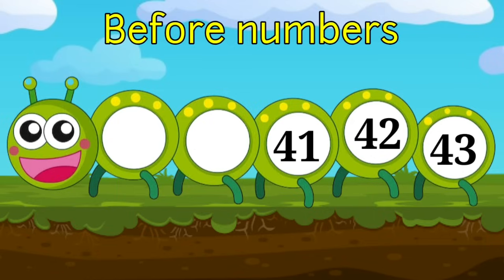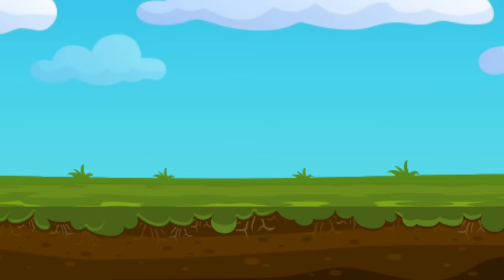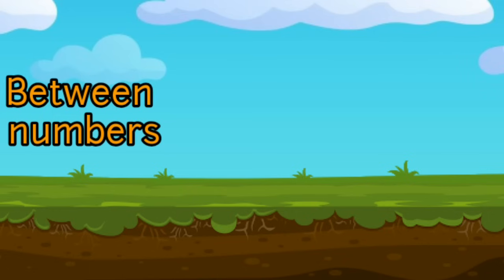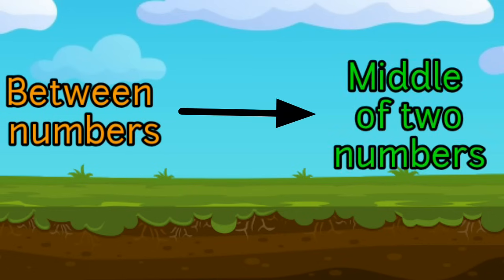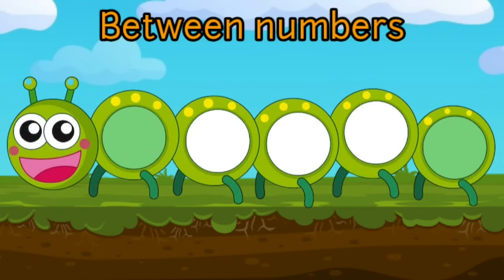That's right, before 40 is 39. Next let's do between numbers. Between numbers are those numbers which come in the middle of two numbers. Look at this caterpillar — which number will come in between 29 and 31?